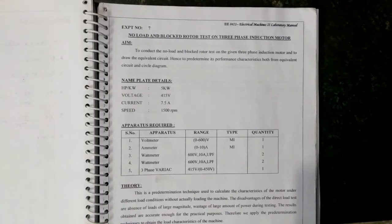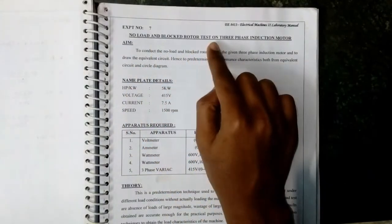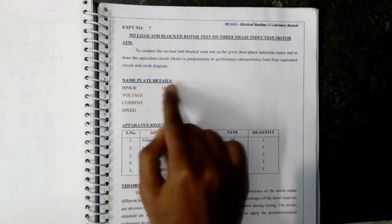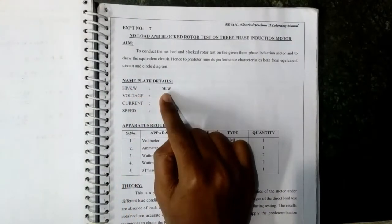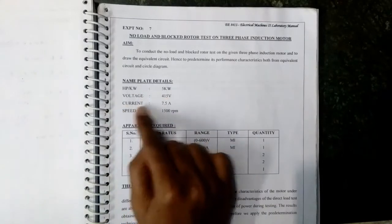Hi guys, in this experiment I am going to talk about no-load and blocked rotor test on a three-phase induction motor. The nameplate details are: HP/kilowatt is 5 kilowatt, voltage is 415 volt, current is 7.5 ampere.